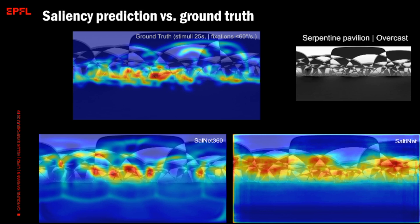Another point: how does our viewing behavior change with sky condition? When comparing clear to overcast sky, the viewing patterns actually present higher similarity — both in the values and the ground truth maps. This shows that the spatial composition of the space plays a very important role in how we see spaces, while sky condition may actually be rather secondary — at least in terms of our viewing pattern, not necessarily our interest.